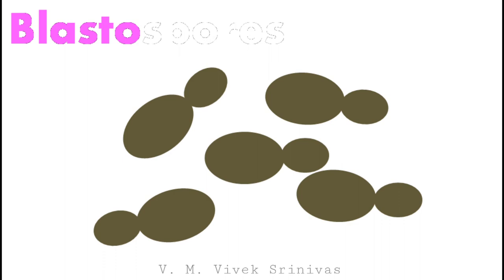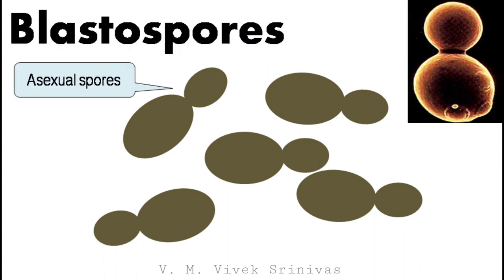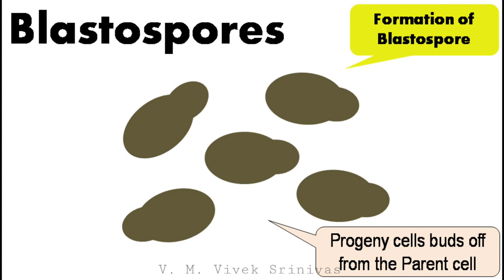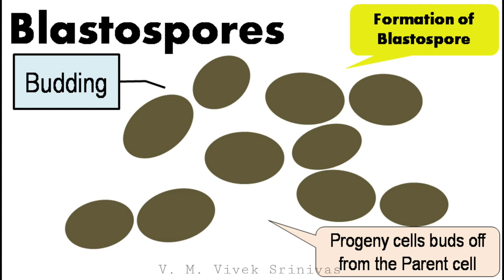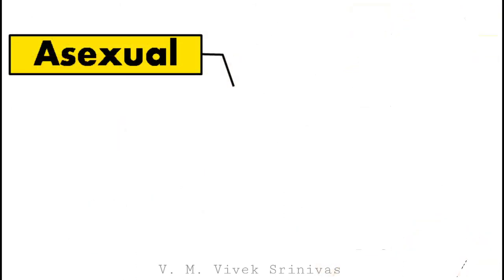Finally, blastospores. This is an asexual spore. In the formation of a blastospore, the progeny cells bud off from the parent cell to form a separate cell. The process is termed as budding. With this we are at the end of asexual reproduction and the asexual spores.